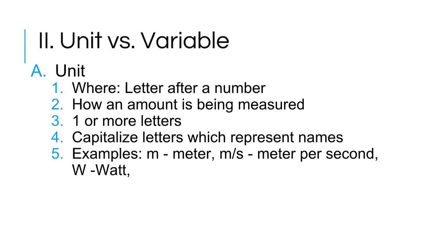Next is unit versus variable. For a unit, where are you going to find it? It's going to be the letter after a number, and it is how an amount is being measured. It's going to be one or more letters, and we're going to capitalize letters which represent names. Some examples are m which stands for meters, m/s which stands for meters per second, or W which stands for watt. We usually see this as five meters, six meters per second, three watts.